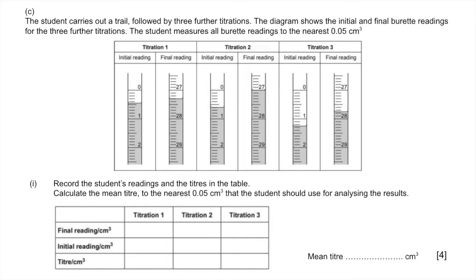Part C: we've got to read these titration readings and complete the table and then calculate the mean titre to the nearest 0.05 cm³ that the student should be using for analyzing the results. For titration one, we're looking at where the meniscus is. The meniscus is not quite on that line, so we should record that as 0.45. The final burette reading, you can see the meniscus is exactly on the line, so that will be reported as 27.30. The difference between those two is 26.85, so that's your titration.